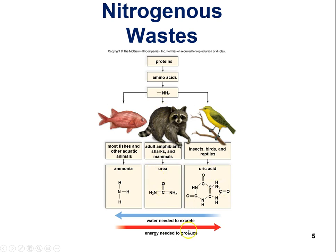Uric acid requires a lot more energy to produce from ammonia but needs a lot less water. Animals that live in environments with less available water — not able to secrete large amounts of urine — will convert ammonia to uric acid and excrete it that way.